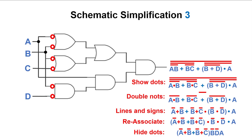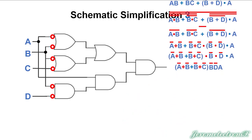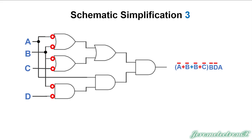I want to show what it looks like when we go even further. This is what we end up with — A plus B added with B plus C, multiplied against NOT B, NOT D, and A. That's exactly what we have when we simplified. The Boolean expression and the schematic agree with each other.